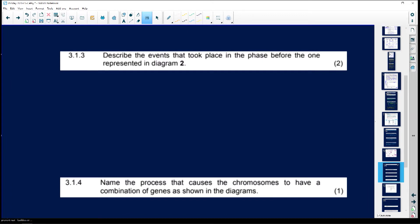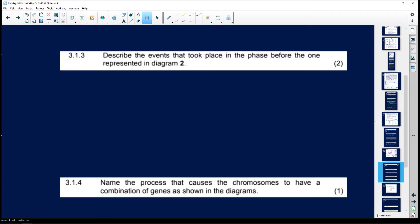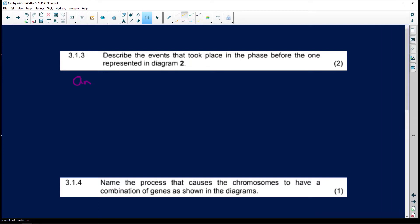It says, describe the events that took place in the phase before the one represented in diagram two. So before diagram two would have been anaphase two. Remember, we go prophase one, metaphase one, anaphase one, and telophase one. And then we have the same prophase two, metaphase two, anaphase two, and telophase two.